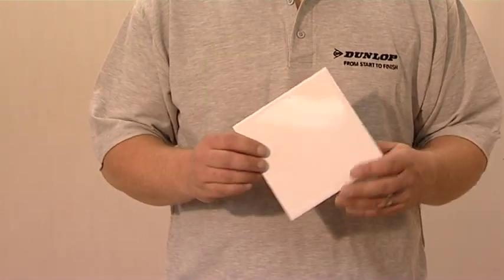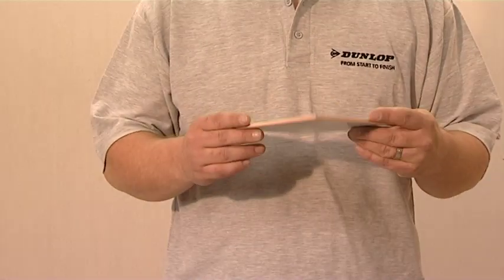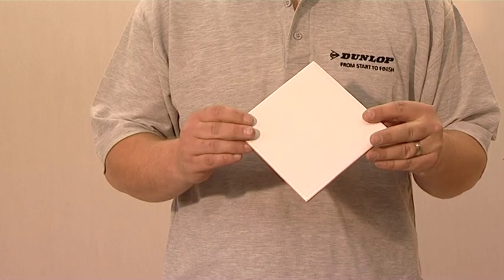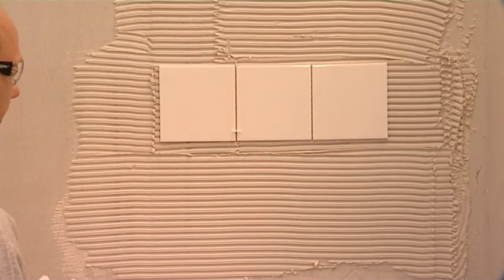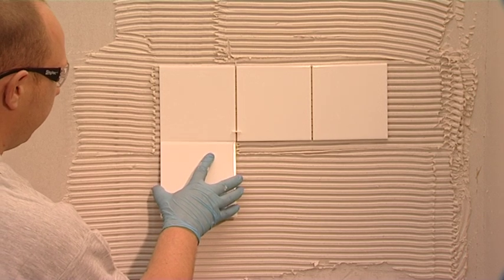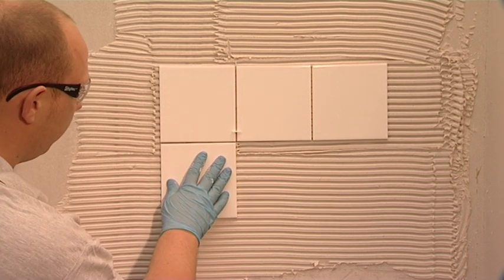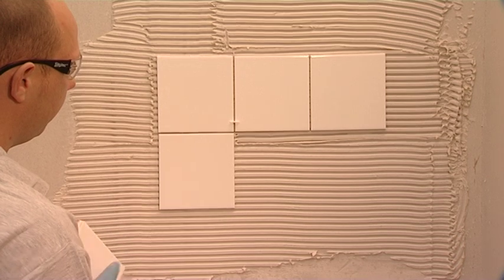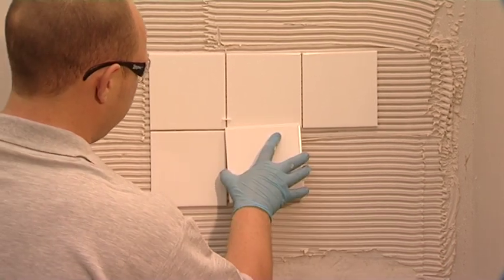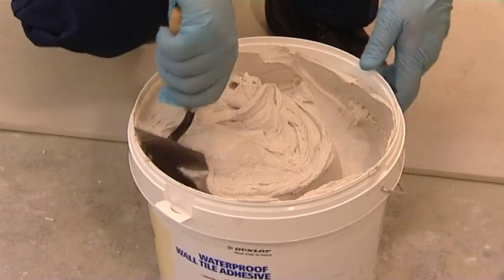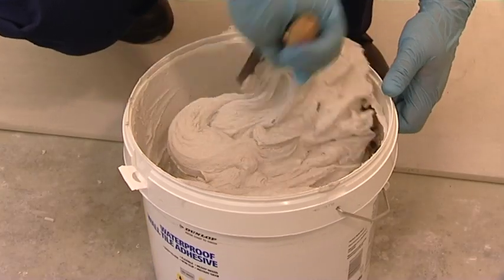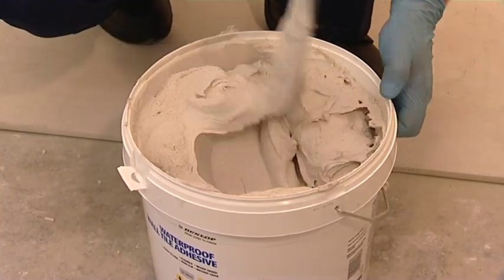Porous bodied ceramic tiles or biscuit body tiles are mainly suitable for walls. These tiles are highly porous, typically with between 10-20% water absorption, and they have relatively low load-bearing capacity. Use either a powdered or ready-mixed adhesive with these tiles.